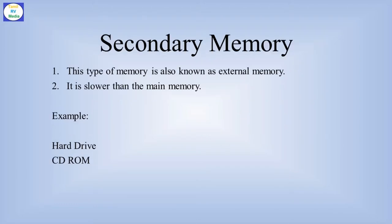Secondary memory is the third type. If you have a web document, you can save it and store it in physical storage using secondary memory. For example, a hard drive or a CD drive — we can store data there permanently. Speed-wise, secondary memory is slower than primary memory, but it has a large data storage capacity.